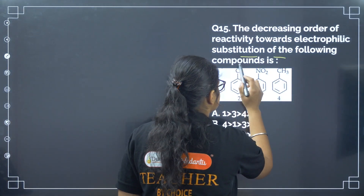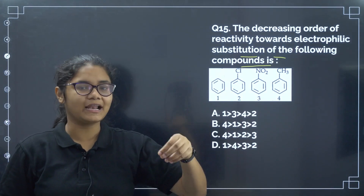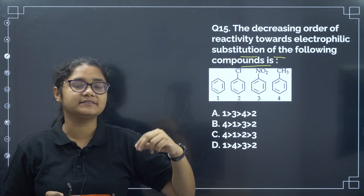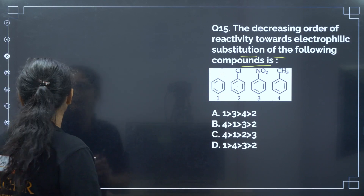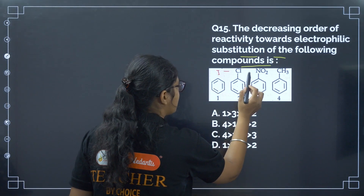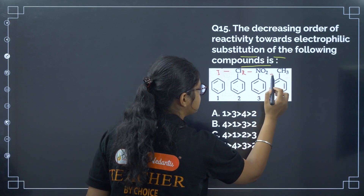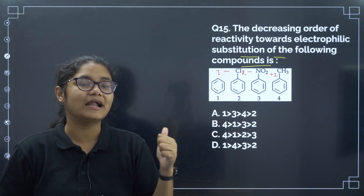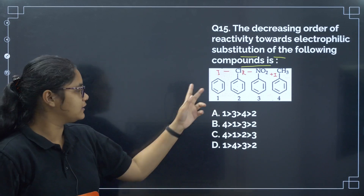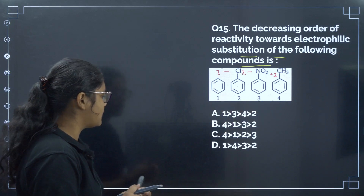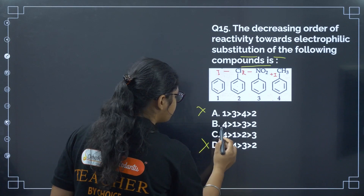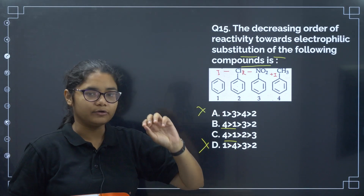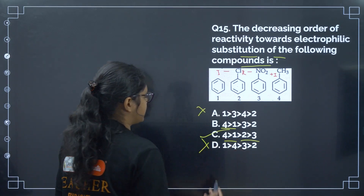Next: the decreasing order of reactivity towards electrophilic substitution. The reactant should be nucleophilic — electron rich. Any group that donates electrons to the ring increases nucleophilicity and reactivity. Chlorine has minus I effect, NO2 has minus R effect, and CH3 has plus I effect. CH3 donates electrons making that compound most reactive. Compound 1 has no activating groups. NO2 with minus R withdraws more than Cl with minus I, so compound 3 is least reactive. Correct answer is option number C.